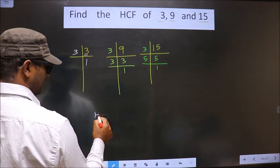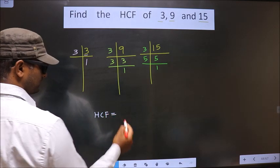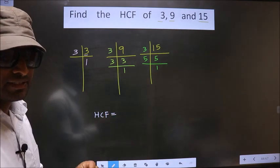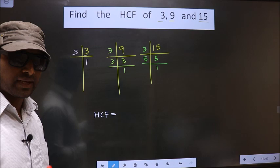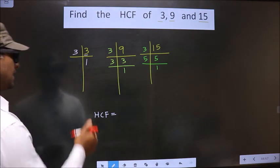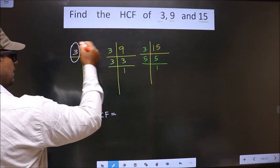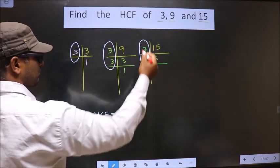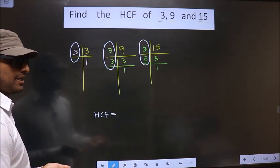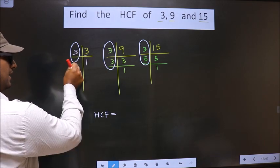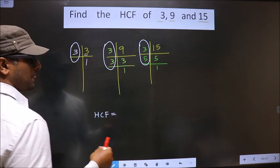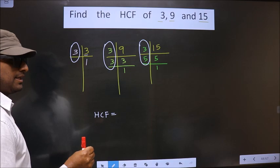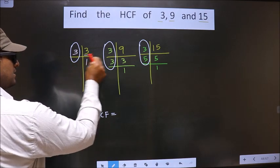So now, our HCF is the product of numbers that are present here, here, and also here. So now we should find the numbers present in these three places. I repeat, we should find the numbers present in these three places.